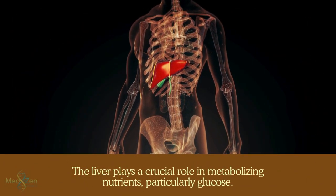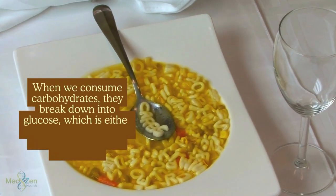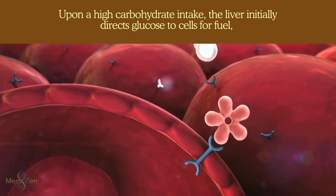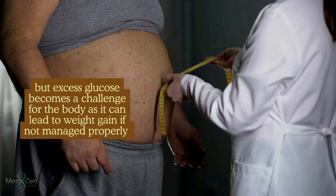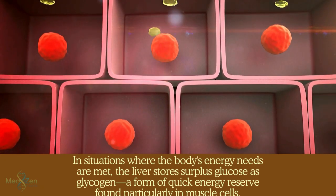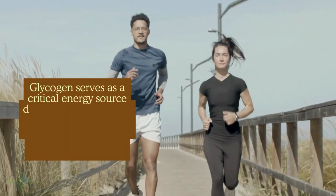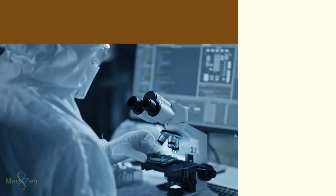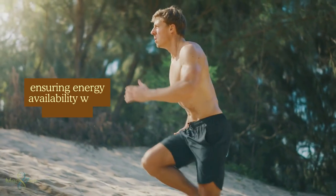The liver plays a crucial role in metabolizing nutrients, particularly glucose. When we consume carbohydrates, they break down into glucose, which is either utilized immediately for energy or stored for future use. Upon high carbohydrate intake, the liver initially directs glucose to cells for fuel, but excess glucose becomes a challenge. The liver stores surplus glucose as glycogen, a form of quick energy reserve found particularly in muscle cells. Glycogen serves as a critical energy source during physical activity, allowing individuals to maintain energy levels even during calorie restricted conditions.